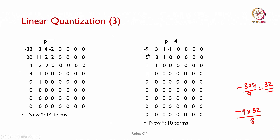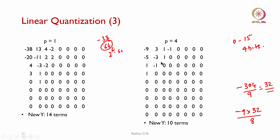How many bits are needed? To represent values up to 64, since 2 to the power of 6 is 64, we need 6 bits, which is 2 bits fewer than 8. With p equal to 1, 14 terms remain; with p equal to 4, only 10 terms remain — 4 fewer terms — and the number of bits required is also reduced.